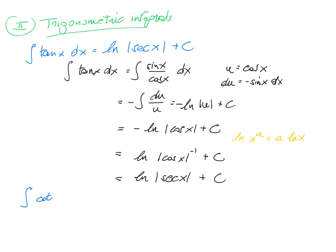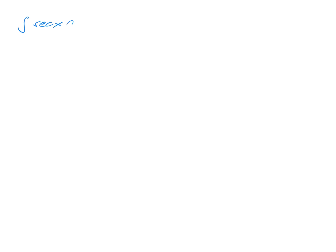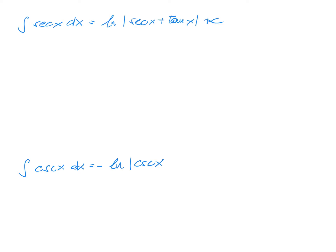In the same way, you can calculate the integral for cotangent. The integral of cotangent x dx is ln of the absolute value of sine of x plus a constant, using the same reasoning. We also have the integral of secant: the integral of secant of x dx is equal to the logarithm of the absolute value of secant x plus tangent x plus a constant.